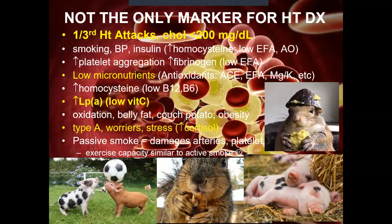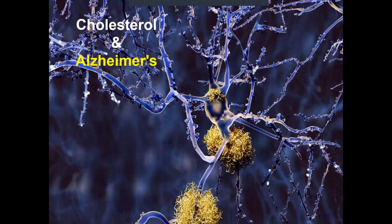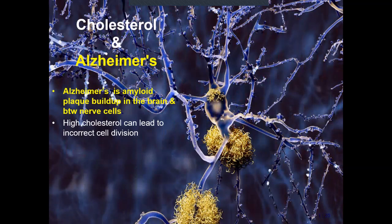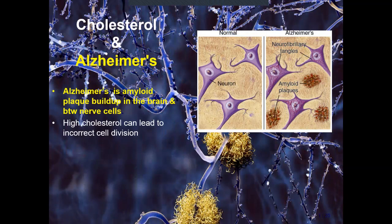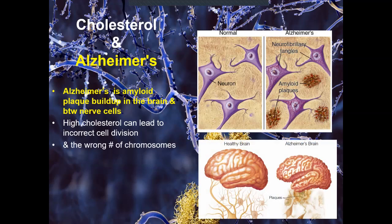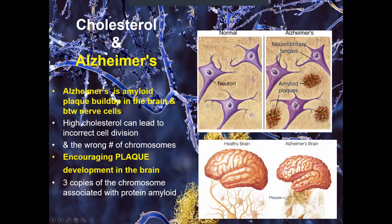Cholesterol and Alzheimer's - this is when I started reading that book out loud to Joey. Alzheimer's is this amyloid plaque buildup in the brain. These are your neurons, and you start getting these plaques building up - cholesterol plaques. The high cholesterol also leads to incorrect cell division - you get the wrong number of chromosomes, which is really bizarre. There is the healthy brain we all want, and an Alzheimer's brain with plaques. They'll get three copies of the same chromosome, which makes them have more of one protein.